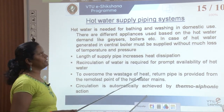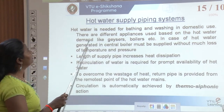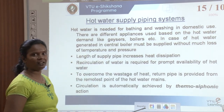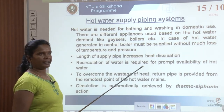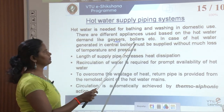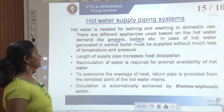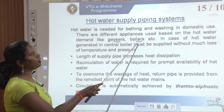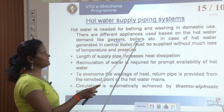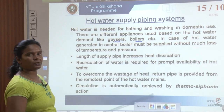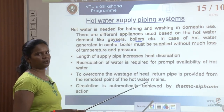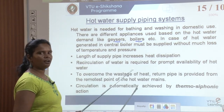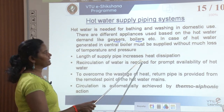Now we have hot water supply piping systems. Hot water is used for bathing, cleaning, cooking, etc. It can be provided by geysers or boilers, or a centralized hot water system for continuous hot water demand. For less hot water demand, geysers and boilers are used. While providing hot water supply, we must consider that the length of supply pipe increases heat dissipation.